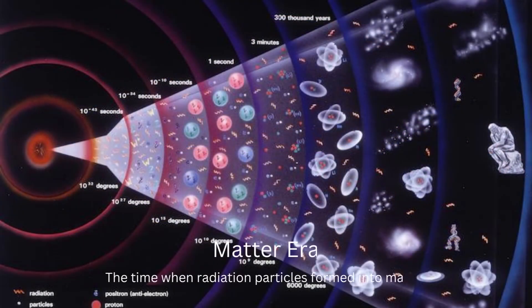The next key stage is what we call the Matter Era. As you can tell from the title itself, this was when matter was created. The three epics, or sub-stages, of this era were called the Atomic, Galactic, and Stellar Epics. In these sub-stages, quarks — which is a type of matter — combined together to form neutrons and protons. Neutrons and protons connected to make nuclei, and made the first ever element: Helium.